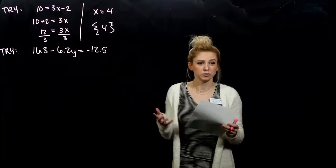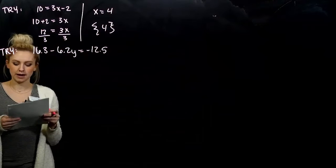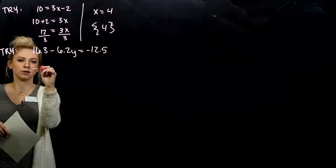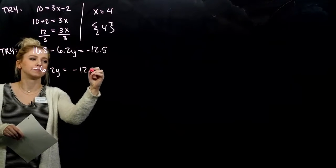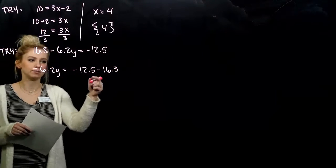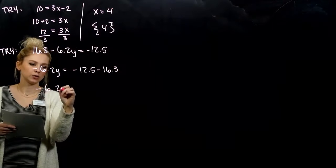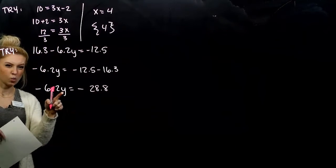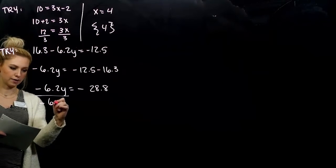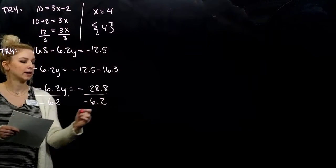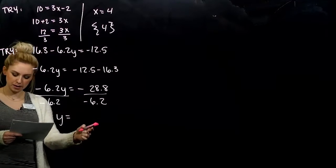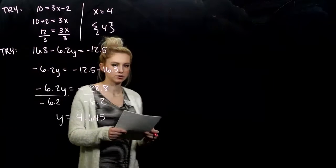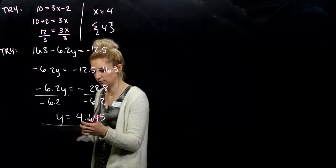The same story works for decimals — just a little bit more work. The first thing that has to move is 16.3, because I want that variable term on its own. Subtract that from both sides — it'll be gone on the left and move to the right. So we're looking at minus 6.2y is equal to minus 28.8. I want y on its own with a coefficient of 1, so divide both sides. A negative divided by a negative gives a positive, so the decimal needs to be positive in the end. Check and make sure — I'll tell you that it works.